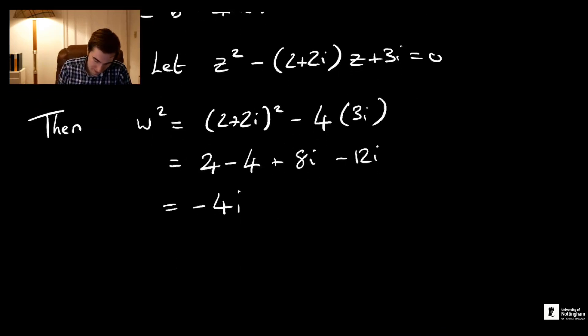So writing w² in exponential form, we can immediately write it as w² = 4e^(-iπ/2).